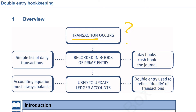We record transactions accurately and summarize them in financial statements, which are then used by stakeholders — such as investors, managers, and regulators — to make decisions about the business. Whenever a transaction occurs, you have to record it into the books of prime entry, which is a simple list of daily transactions. There are mainly seven books of prime entry, and here we can see three types mentioned: day book, cash book, and the journal. After recording, we update the ledger accounts, which should always be balanced.